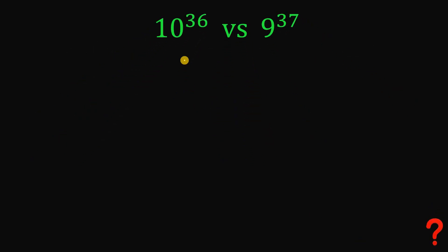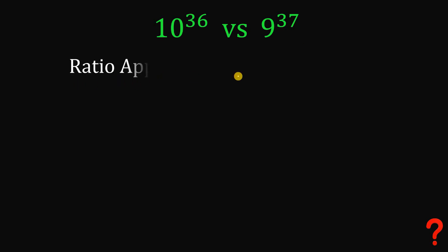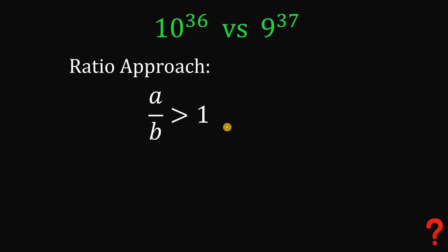So in this video, the goal is to find out which number is greater: 10 raised to the power of 36, or 9 raised to the power of 37. Now there are a lot of ways to answer this, but what I'd like to do in this video is to use the ratio approach. If we find that A over B is greater than 1, it follows that A is greater than B.